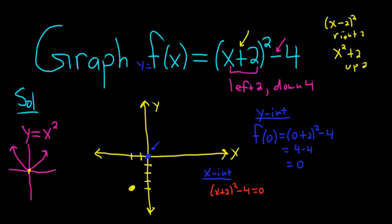To solve this for x, you add the 4 to both sides. So plus 4 plus 4. Boom. So we have (x plus 2) squared equals 4. And to get rid of the 2, you just take the square root of both sides. So square root, square root.